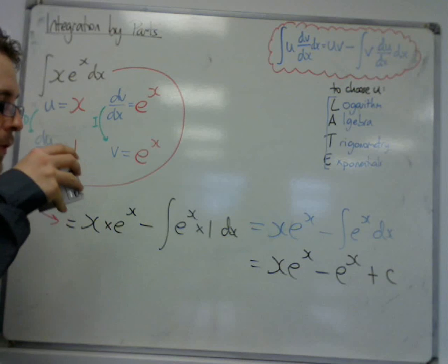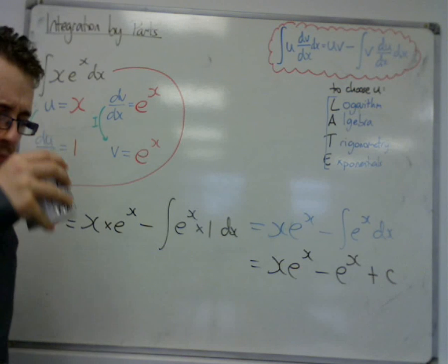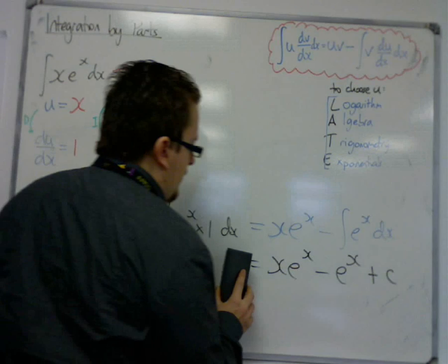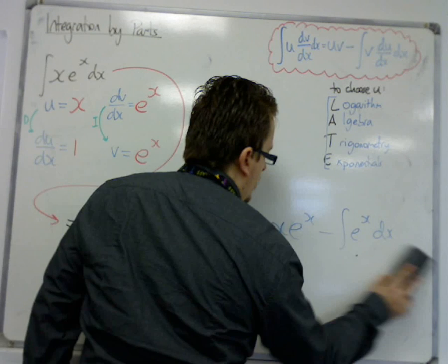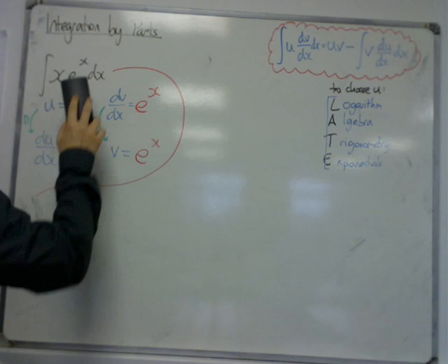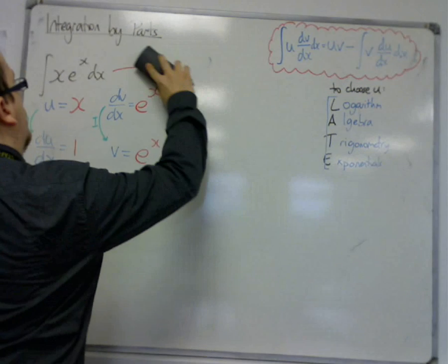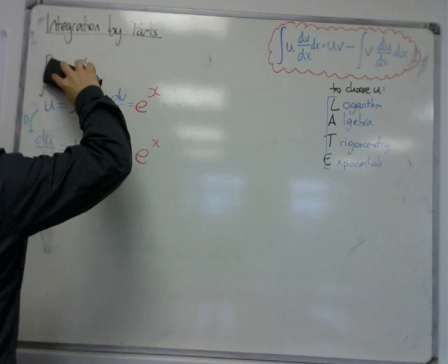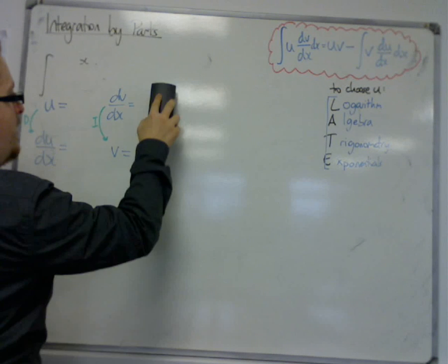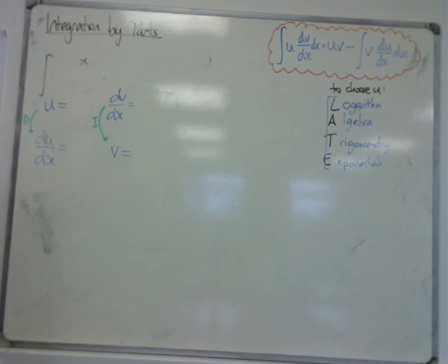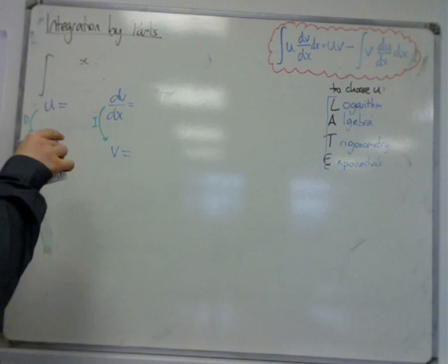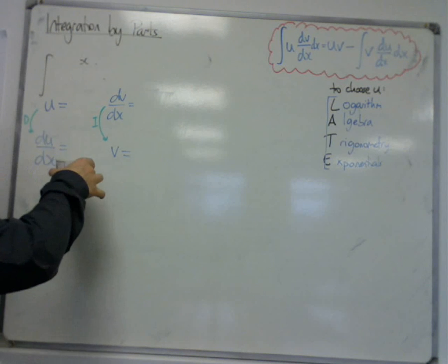Right. So let's look at another example. I'm going to leave those bits up because this is the same process each and every time. So I would suggest every time you start a question like this, you set out your u, dv/dx, du/dx, v.